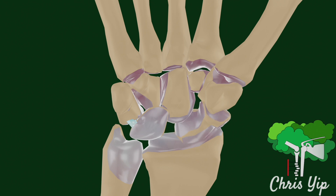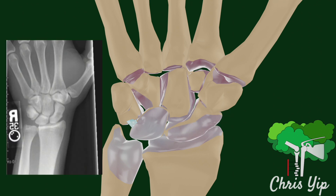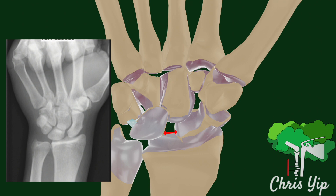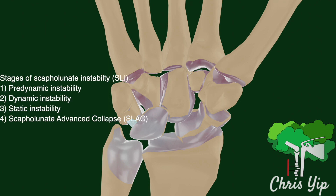In the early stages of a scapholunate ligament injury, there may be no signs on plain PA x-rays unless a stress view is taken. A stress view entails that a patient is clenching their fists. This can reveal a widening of the scapholunate interval, known as the Terry-Thomas sign. This stage of the scapholunate instability is known as a dynamic instability, as the signs are only visible in a stress view.